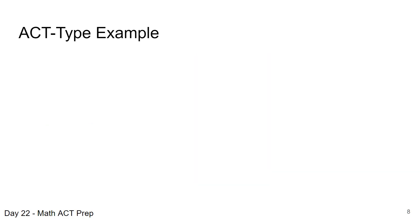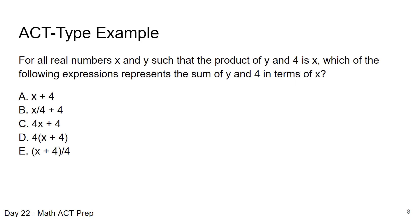Here's another ACT type example that you can try out. Pause the video here, work the problem, and we'll come back and look at it. It says for all real numbers x and y such that the product of y and 4 is x, which of the following expressions represents the sum of y and 4 in terms of x? So this is a multi-step problem and we're just going to take it a little bit as we can. I like to start here, let's look in our for statement. It says for all real numbers x and y, so we're talking about two different variables x and y, we know the product, product should signify multiplication, the product of y and 4, so that's 4y, is means equal x. So we can already write this first expression here, this first equation, 4y equals x.